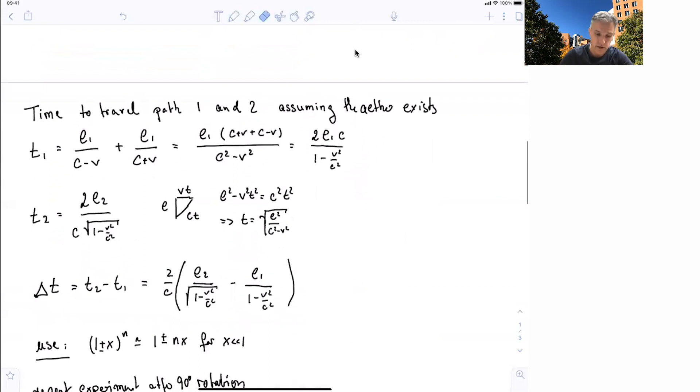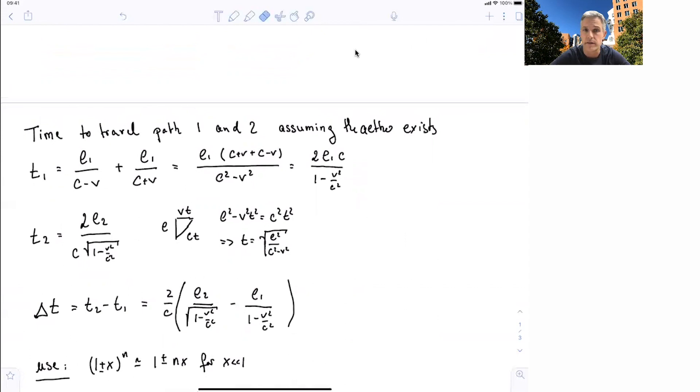So obviously I've worked this out already. We want to calculate the time it takes light to travel path one. And that is going up and coming down, going left and going right. So in the first case, the velocity is reduced by the velocity of ether. So the time it takes is L1, the length, divided by c minus v, plus the return leg, L1 over c plus v. And then you work this out and you simplify a little bit, and you get this first equation.